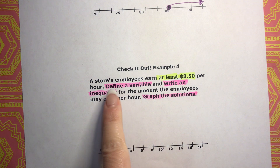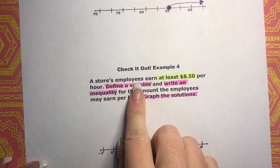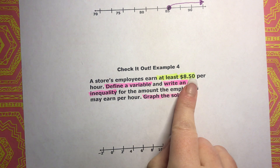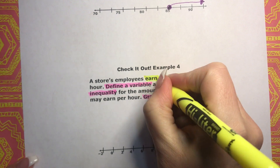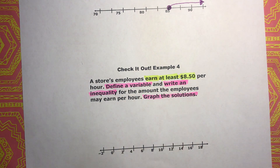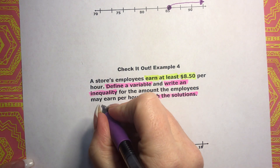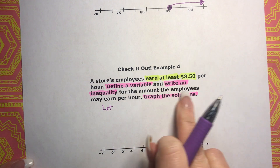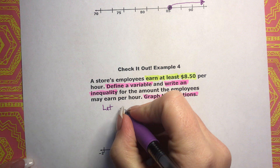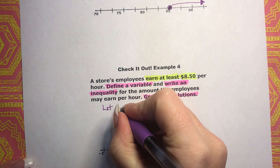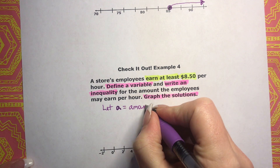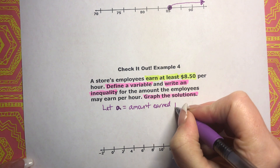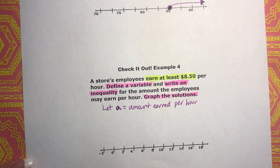We have to define a variable first. We're really talking about earnings — the amount earned per hour — so that's going to be the variable. We'll say: let A equal amount earned per hour. That's our variable A.